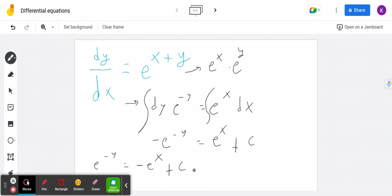We can take a natural log of both sides and then solve for y. So y is basically equal to negative ln of negative e to the x plus c.